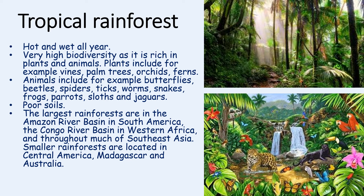The rainforest is home to about half of the world's plant and animal species. It provides us with oxygen and medicines. Tropical rainforests are so large and dense that they are believed to have many unknown plant and animal species yet to be discovered. Tropical rainforests are located close to the equator — the largest are in the Amazon river basin in South America, the Congo river basin in western Africa, and throughout much of South East Asia. Smaller rainforests are in Central America, Madagascar and Australia.